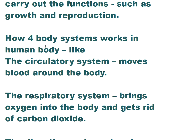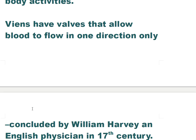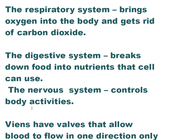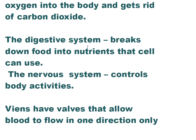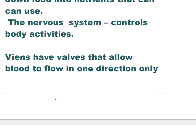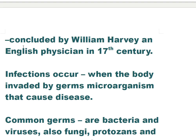Body systems in the human body: the circulatory system moves blood around the body; the digestive system breaks down food into nutrients that cells can use; the nervous system controls body activities. Veins have valves that allow blood to flow in one direction only — concluded by William Harvey, an English physician, in the 17th century.